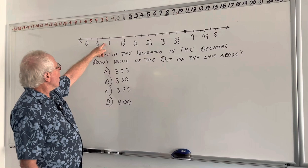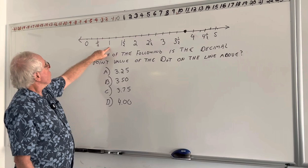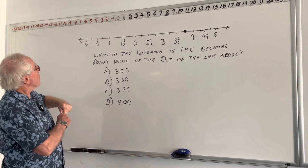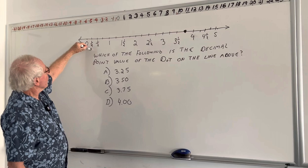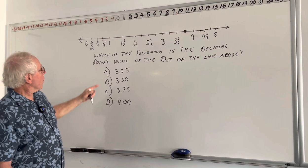Look at the information they give us: here's 0, 1 half, another number that's not identified, and 1. Thinking about money sometimes helps. So if this is a dollar, this is 0, and this is a half dollar, you could be pretty confident in saying that this must be a quarter — or if you were using decimals, 25%. If this is a half dollar and this is 1, the same thing: 3 quarters. So we can see that each of these marks is going up by a fourth.